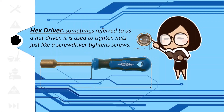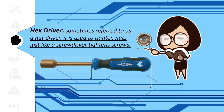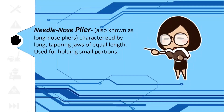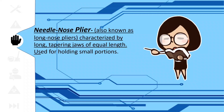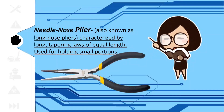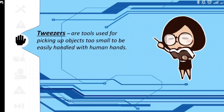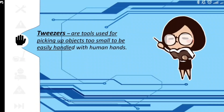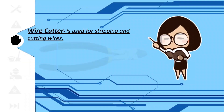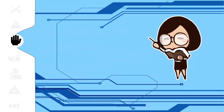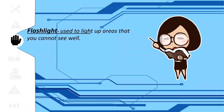Hex driver, sometimes referred to as a nut driver, is used for tightening nuts just like a screwdriver tightens screws. Needle nose pliers, also known as long nose pliers, are characterized by long, tapering jaws of equal length and used for holding small portions. Tweezers are tools used for picking up objects too small to be easily handled by human hands. Wire cutter is used for stripping and cutting wires. Flashlight is used to light up areas that you cannot see well.